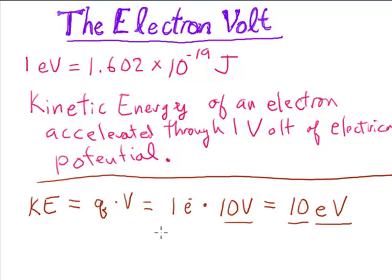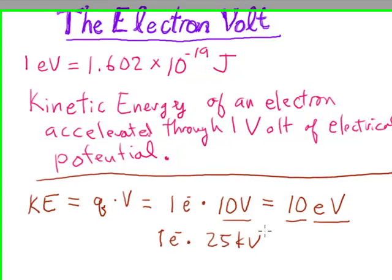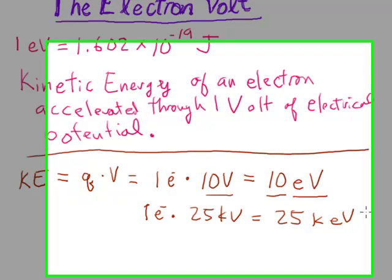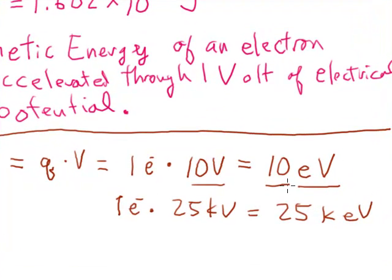If I had, for instance, accelerated an electron through an accelerating potential of 25 kilovolts, then my electron would have an energy of 25 kiloelectron volts. That's all there really is to it. So let's take a look at this and explore that a little further.